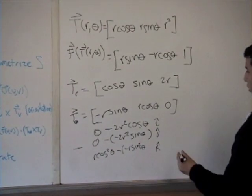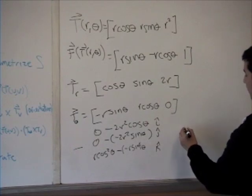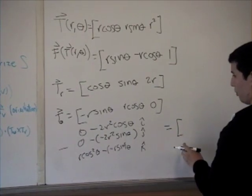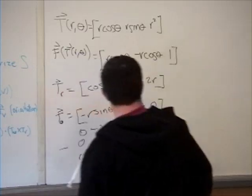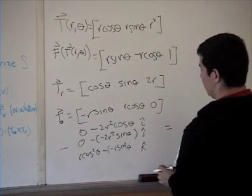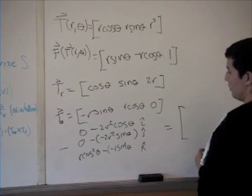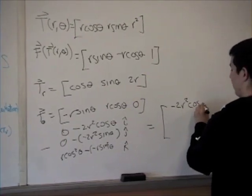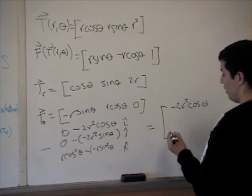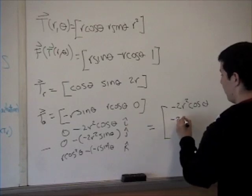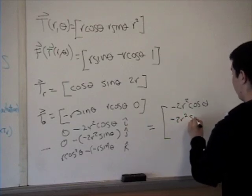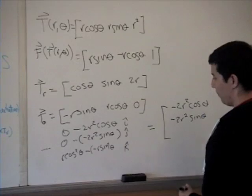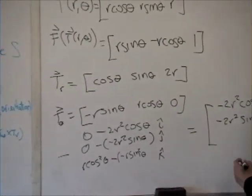And so to create our new vector, we just have -2r² cos(θ), and a negative negative 2r² sin(θ), and for our last one, we can simplify it just to r.